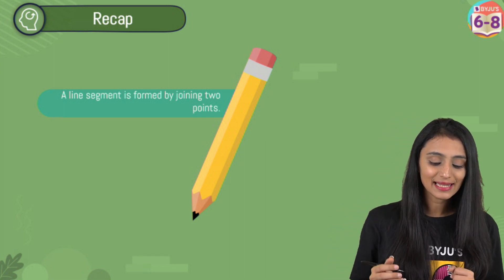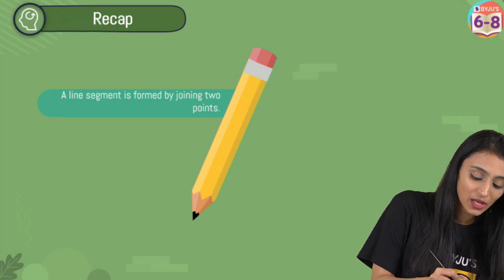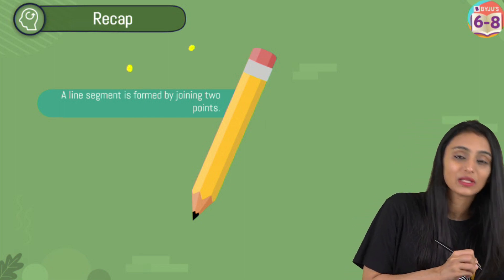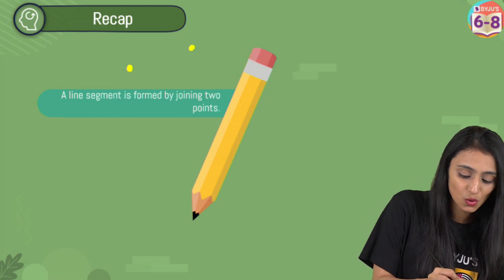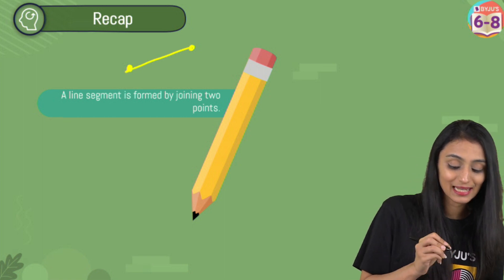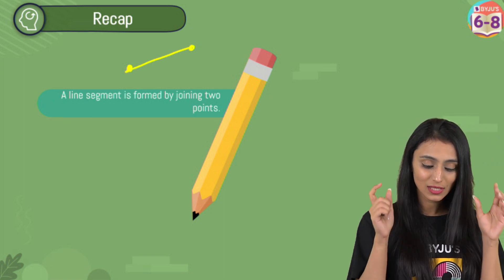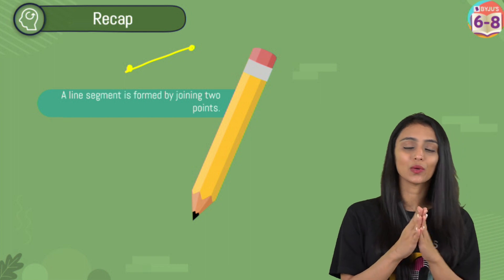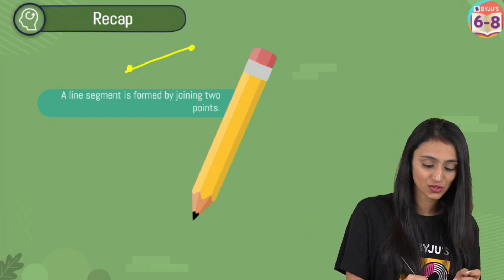A line segment is basically formed by joining two points. Here, these are points, and if I join them, we get a line segment. It is fixed — you cannot extend it in any of the directions.